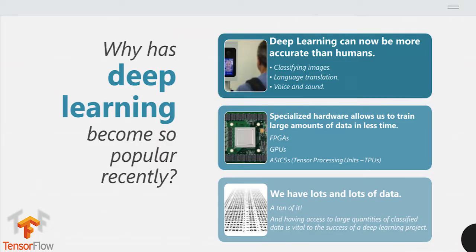Deep learning has become so popular because it's more accurate than humans at classifying images, language translation, voice, and sound. We have very specialized hardware — some even available for free — from GPUs to custom chips like TPUs, and FPGAs that you'd hand-code to optimize for particular algorithms. We also have lots and lots of data. The more data you have for your machine learning or deep learning projects, the better off you'll be.